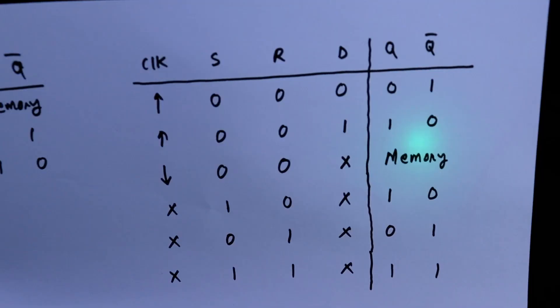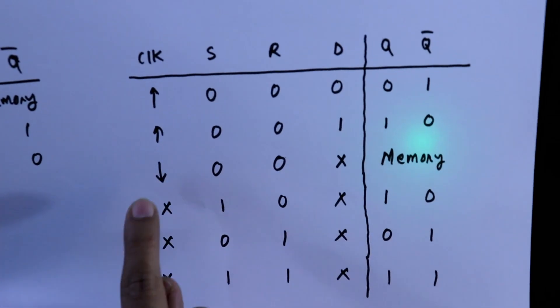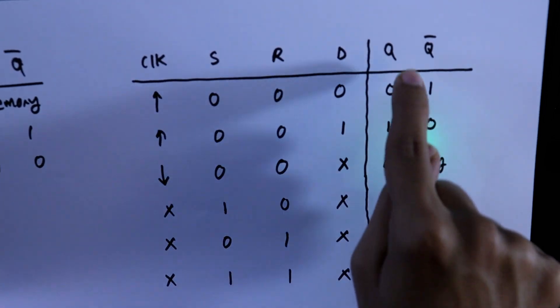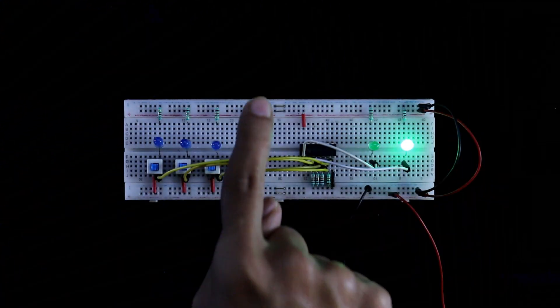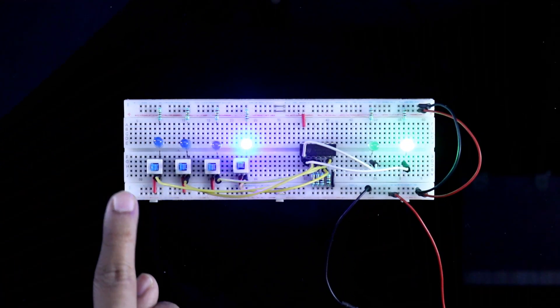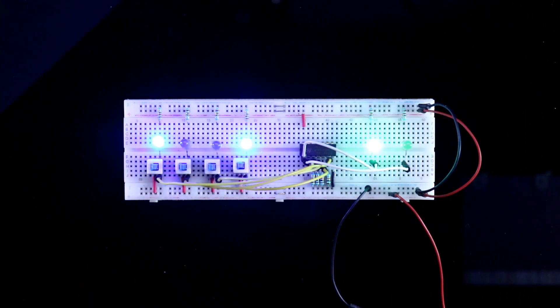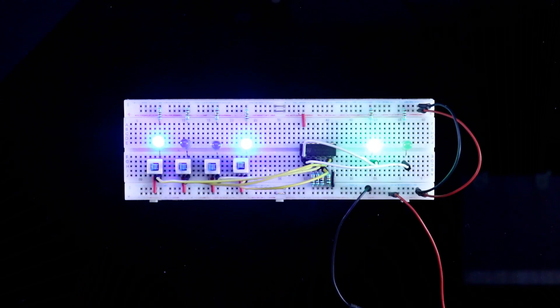Now if D is 1, and clock is changed from 0 to 1, then Q will be 1. D 1, clock 0 to 1. We are getting Q as 1.